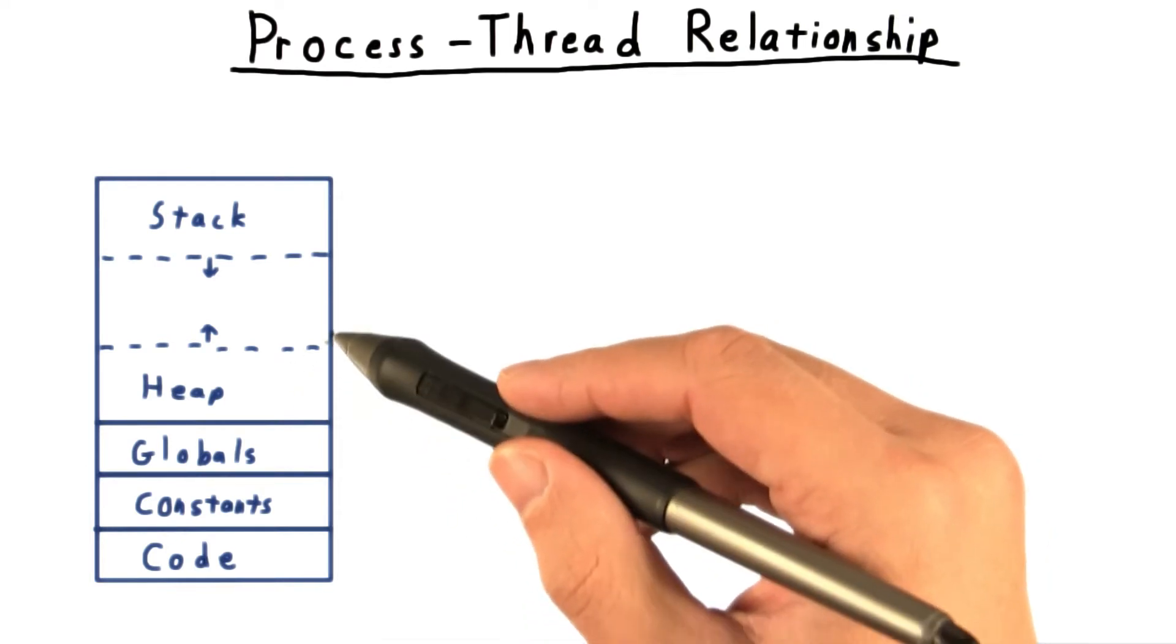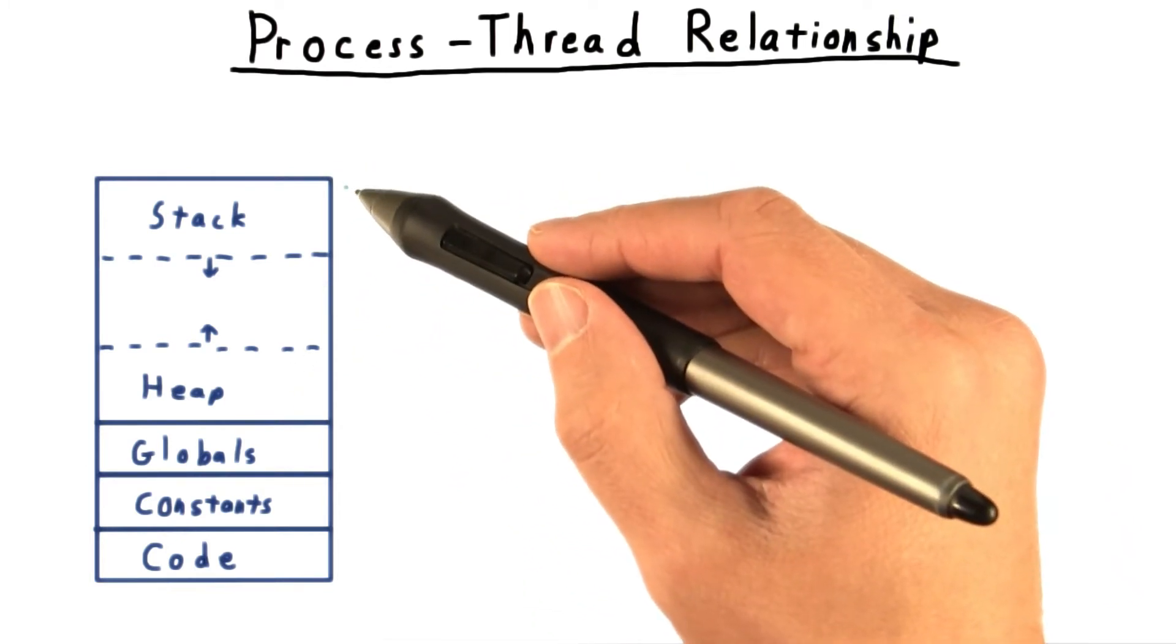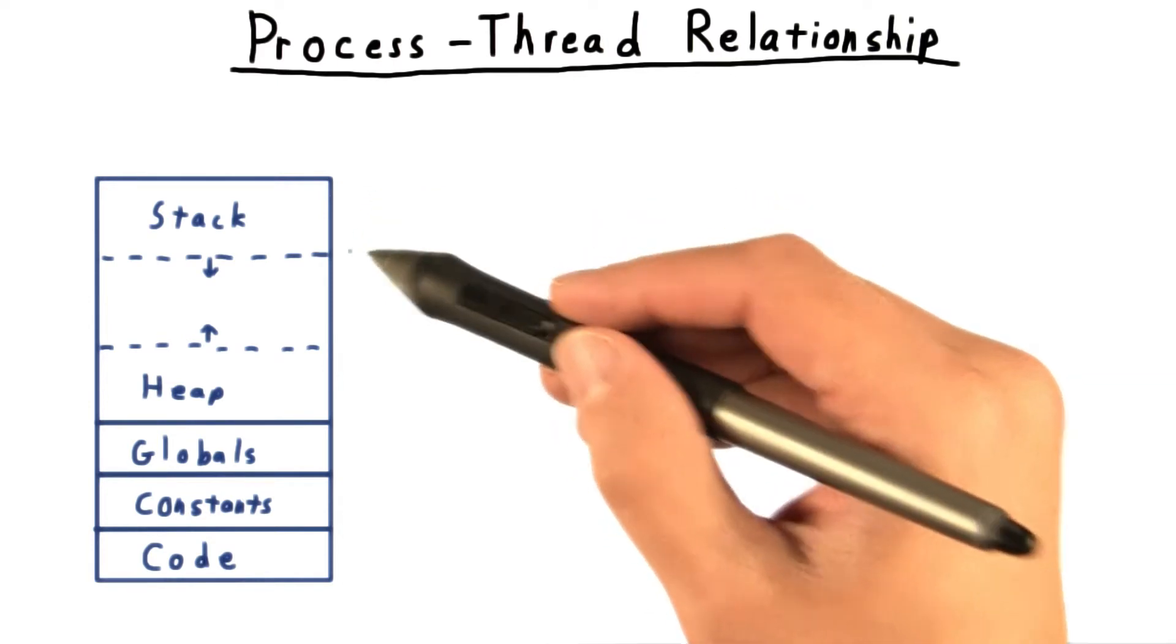And then the heap, which will grow upwards. And then at the top of the address space, and working its way down, we have the current stack of a process.